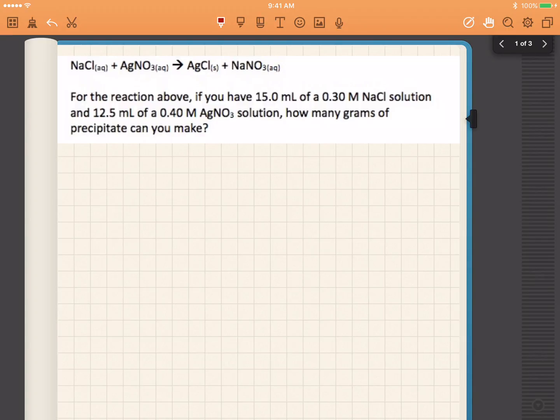Alright, so what have we got here? We've got 15.0 milliliters of a 0.30 molar NaCl solution and 12.5 milliliters of a 0.40 molar silver nitrate solution.